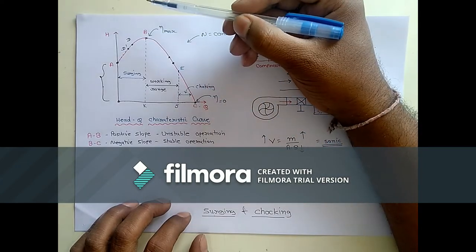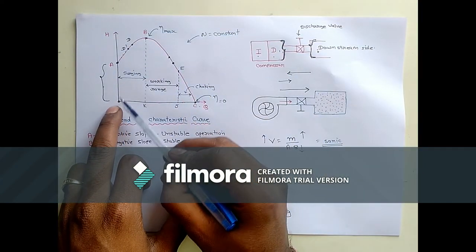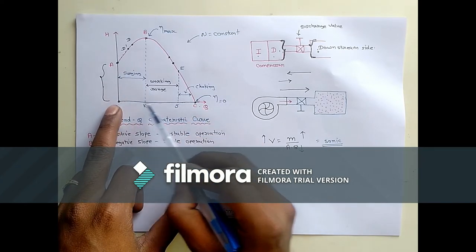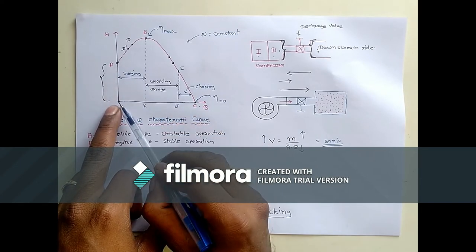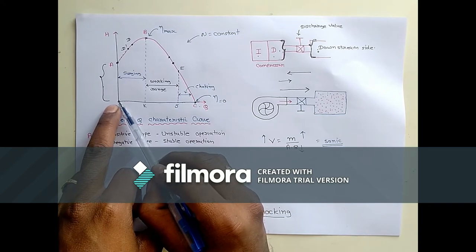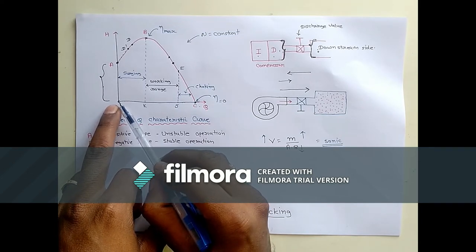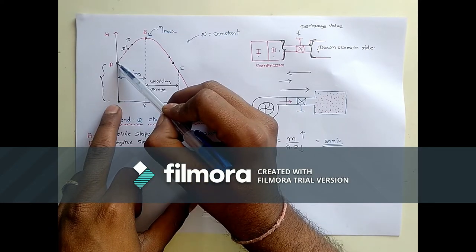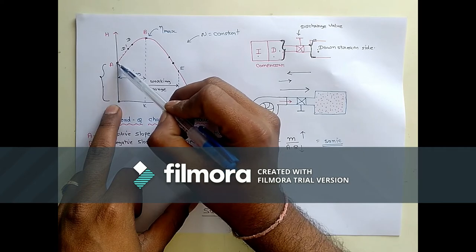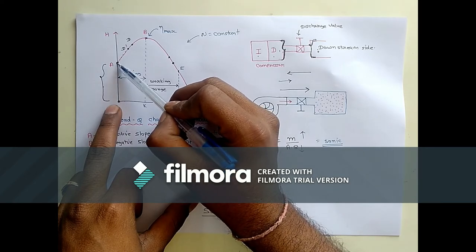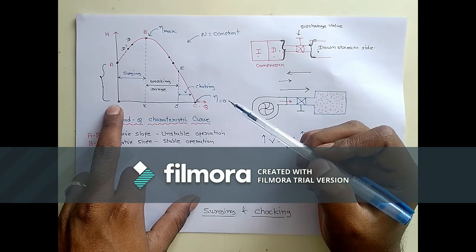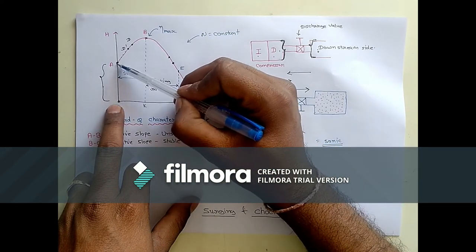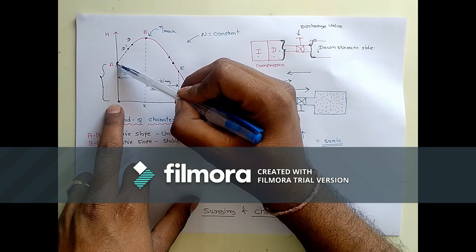In this graph we can see point A. At this point the discharge is 0. What will happen here is the pressure increases from 0 to A. This pressure is due to the impeller. When the impeller is rotating it imparts some pressure to the fluid. So pressure from 0 to A is due to the pressure imparted by the impeller.